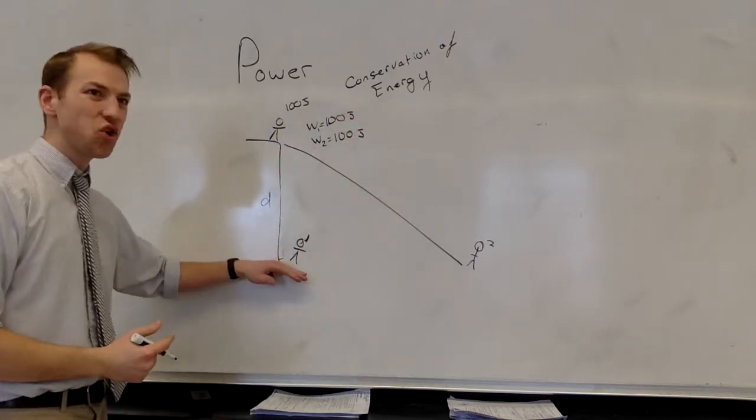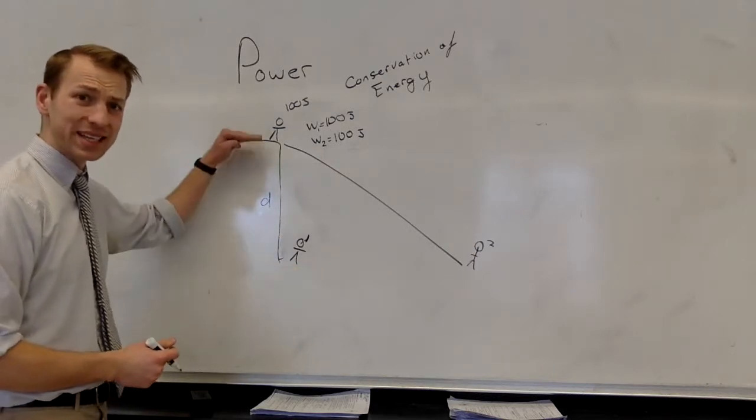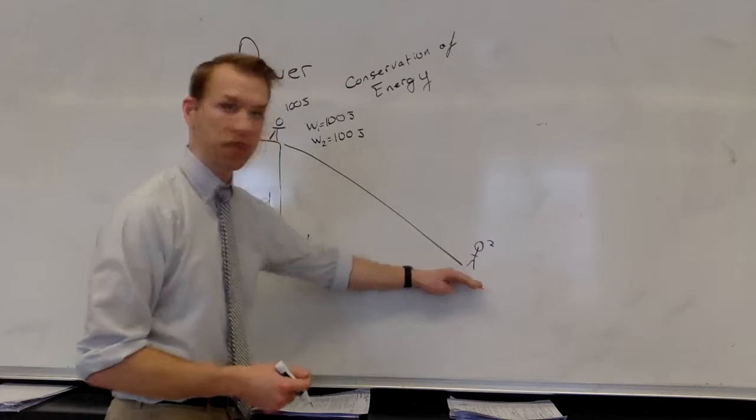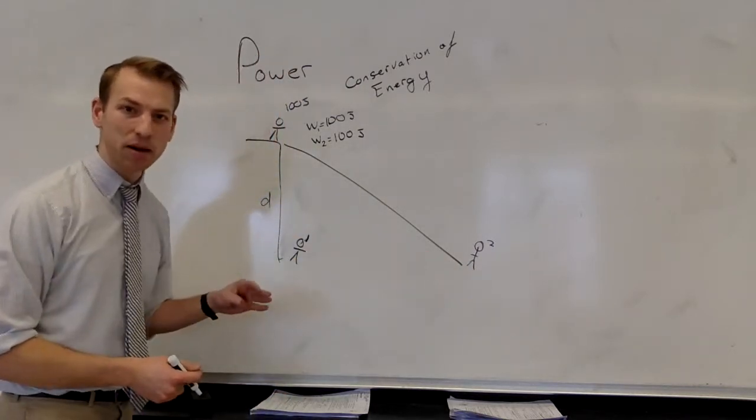But one is so much easier. You would think that this person is doing a lot more work to get to the top of that cliff than this person is doing. But that's not true. In physics, these two people have done the same amount of work.